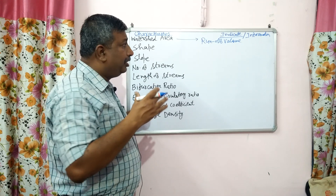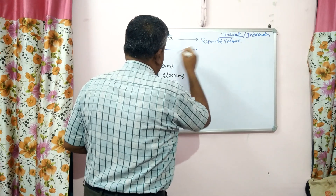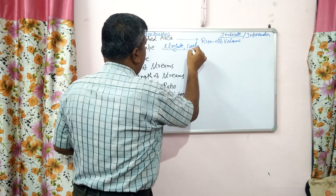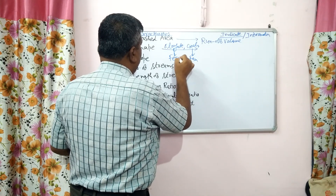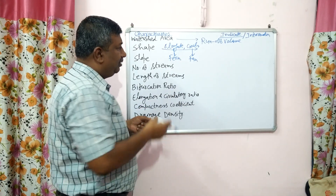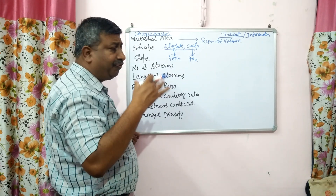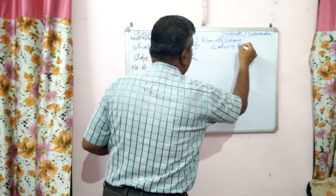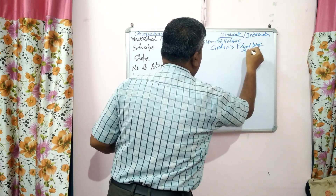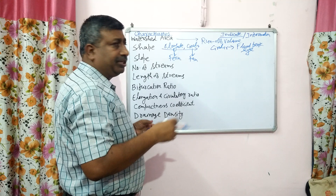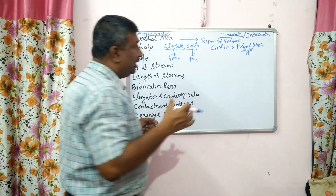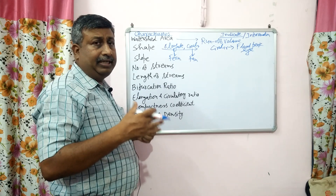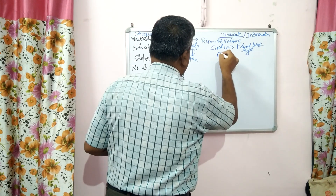If watershed area is large then runoff volume generated will be more. Regarding shape, we discuss elongated shape and circular shape — the circular shape is fan type and the elongated is fern type. Shape indicates the flood peak. In a circular type of watershed, flood peak is high and it is very difficult to manage water at the outlet because all points contribute at the same time and time of concentration is less. In the case of an elongated watershed, flood peak is low but for a longer duration, and we can manage the flood. So shape is an indicator of flood forecasting.